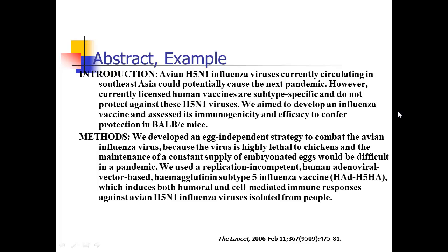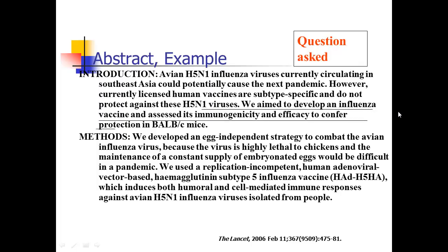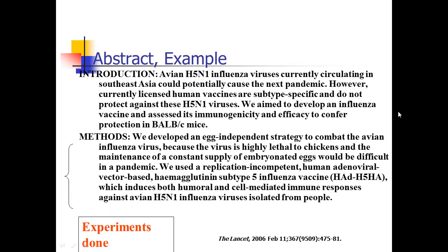Here's an example of an abstract looking at influenza virus and a potential vaccine for avian flu. The abstract opens with background — we know avian flu is a concern and there's no good vaccine yet. Then comes the explicit question asked: 'We aimed to develop an influenza vaccine and assess its immunogenicity and efficacy to confer protection in mice.' So this is a mouse study. Then they give a quick summary of the methods used to create the vaccine and test it in mice.